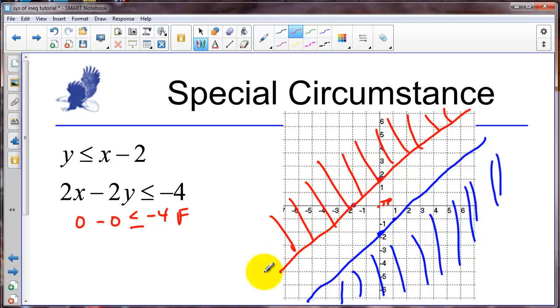So where is the place that has both kinds of shading, both red and blue? And the answer for this one is none. There is no place that has both shading. So for this particular system we would want to write that there is no solution.